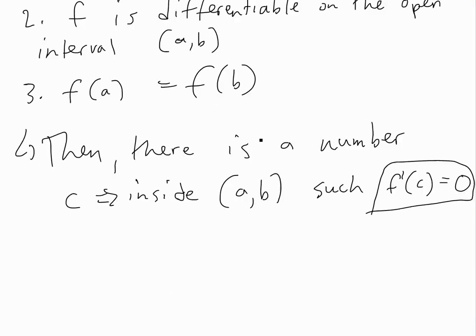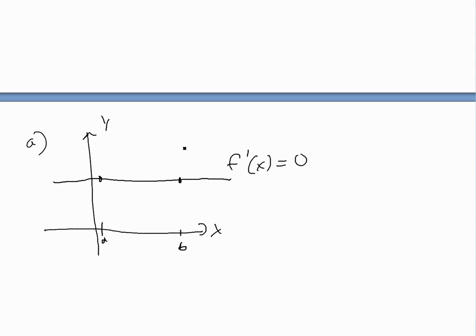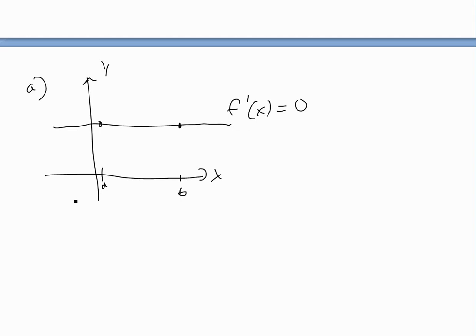You can see this is plausible just by looking at a graph of several cases. In graph A, if the graph is a horizontal line between a and b, then c is every single value and the derivative is zero — basically f of x equals a constant. So this one is obviously true.